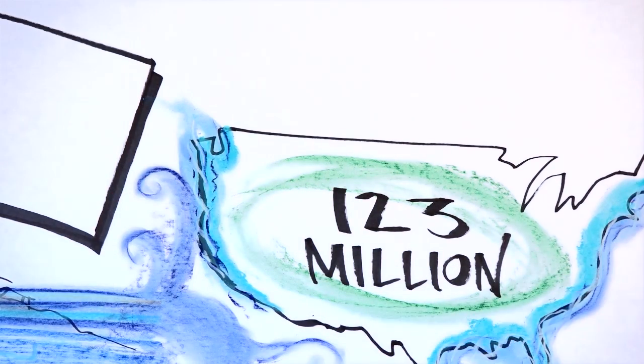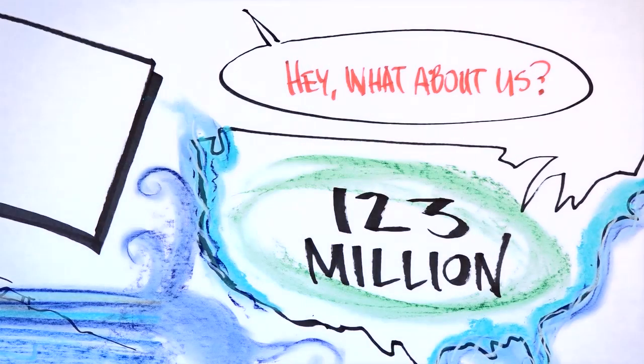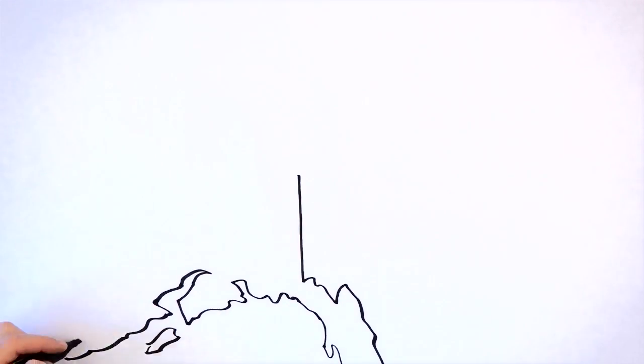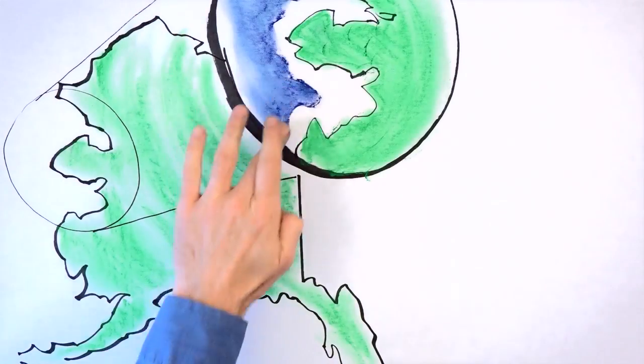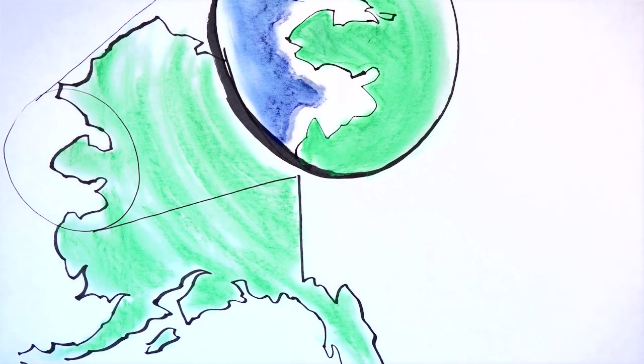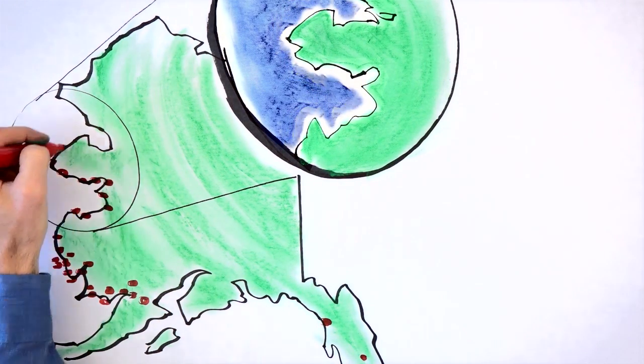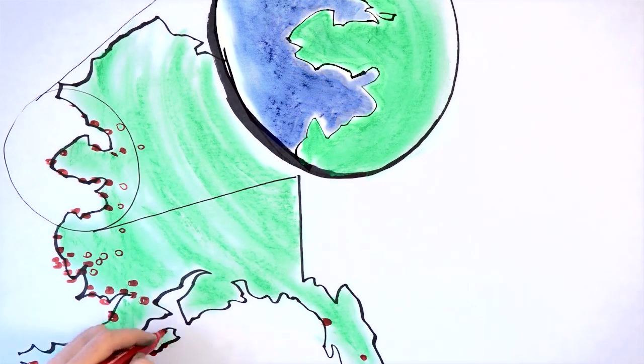But it's even worse for those who live in or near the Arctic. Sea ice protects the region's coastal villages from punishing storms. With sea ice depleting as temperatures soar, more than 30 Alaskan villages are at risk of flooding and erosion and literally sliding into rising waters.